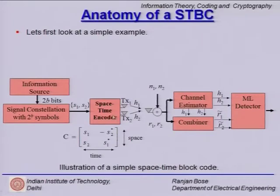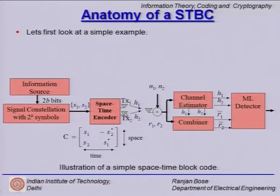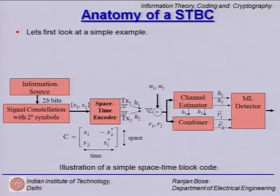In this example, we have 2 transmit antennas, therefore we picked up 2 symbols S1 and S2. We load symbol S1 onto antenna element 1 and S2 onto antenna element 2, so TX1 sends out S1 and TX2 sends out S2. There is only one receiver because in most cases it is difficult to put multiple antennas on the receiver, so we are looking at one single receiver antenna element.